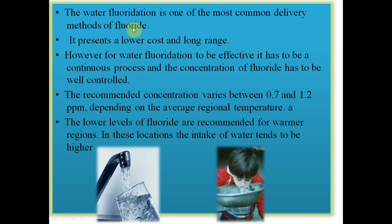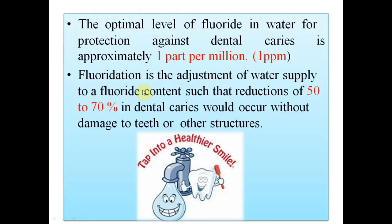Water fluoridation is one of the most common delivery mechanisms because of its low cost and long reach. The ppm must be controlled and it depends on the regional temperature — in a hot climate we give less ppm, and in a colder climate we increase the ppm. The optimal level is one ppm, or one part per million, which gives 50 to 70 percent reduction from dental caries.